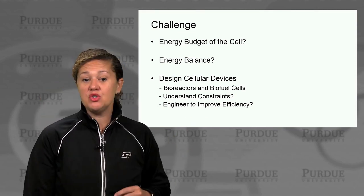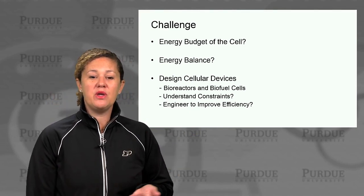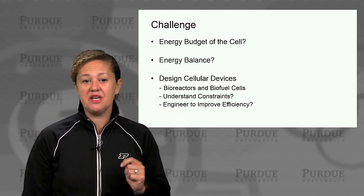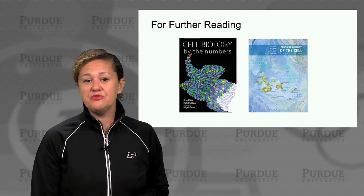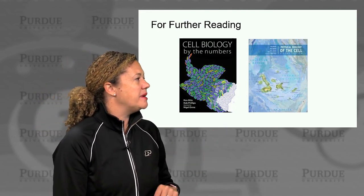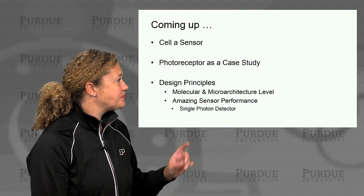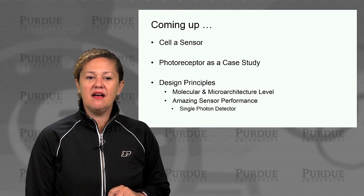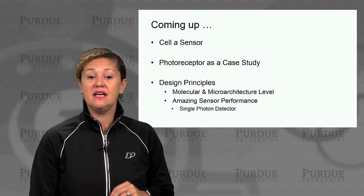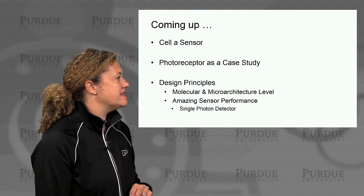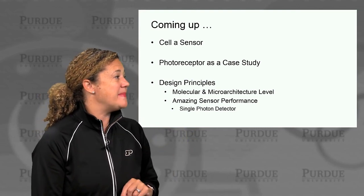As we engineer new work for the cell to do, we need to understand how that fits into the overall energy budget — and whether we can improve efficiency toward the job we want the cell to do. Two great sources for further reading are Cell Biology by the Numbers and Physical Biology of the Cell, some of which is available online. Coming up, we'll think of the cell as a different type of machine and look at its function as a sensor, using a photoreceptor as a case study to examine design principles that give it remarkable sensing performance, including the ability to function as a single photon detector in the dark.